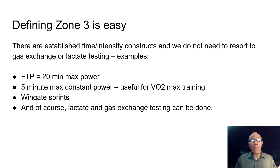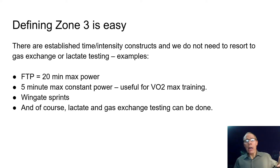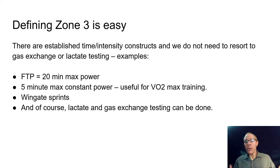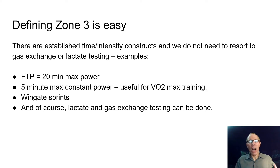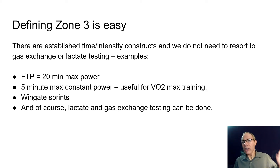Defining zone three is easy. There are established time-intensity constructs — the FTP, the functional threshold power, being one of the most well known. Using a five-minute maximal constant power has been used in VO2 max confirmation studies, Wingate 60-second sprints, and lactate and gas exchange testing to get the respiratory compensation point where the second lactate threshold can be determined.